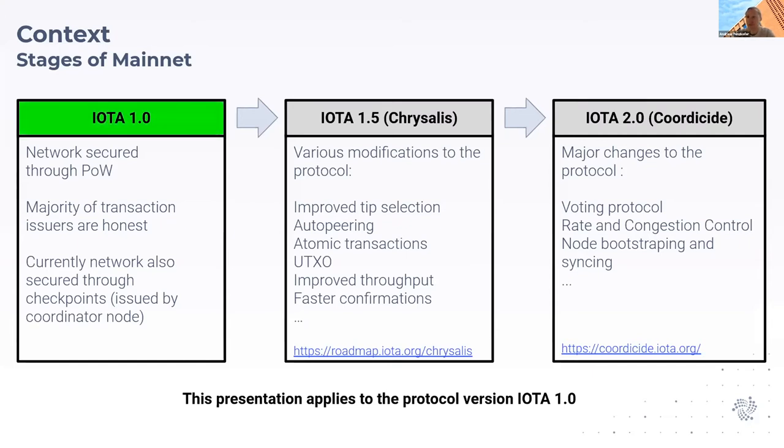In this talk, I will be focusing on the 1.0 protocol because one of the attacks that can be performed on it is a parasite chain attack, which allows double spending of funds.